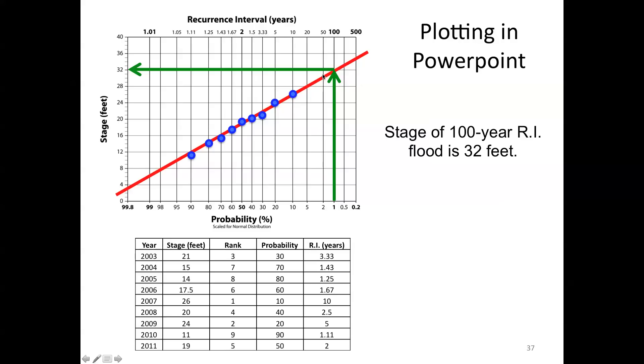What about the flood with 5% annual probability? Well, 5% annual probability would come up. We'd go over 28 feet. And that actually is also the 20-year flood. Note that the 20-year recurrence interval flood is the same as the 5% probability flood.